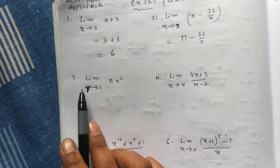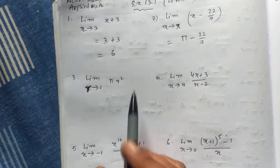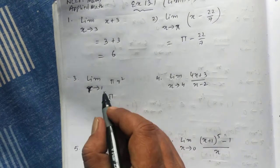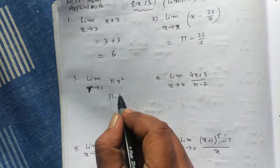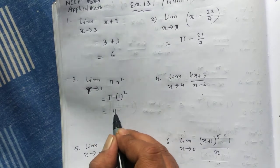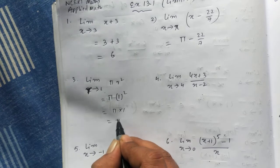Here, limit r tends to 1 of πr². In place of r, you write 1. So π times 1² equals π.